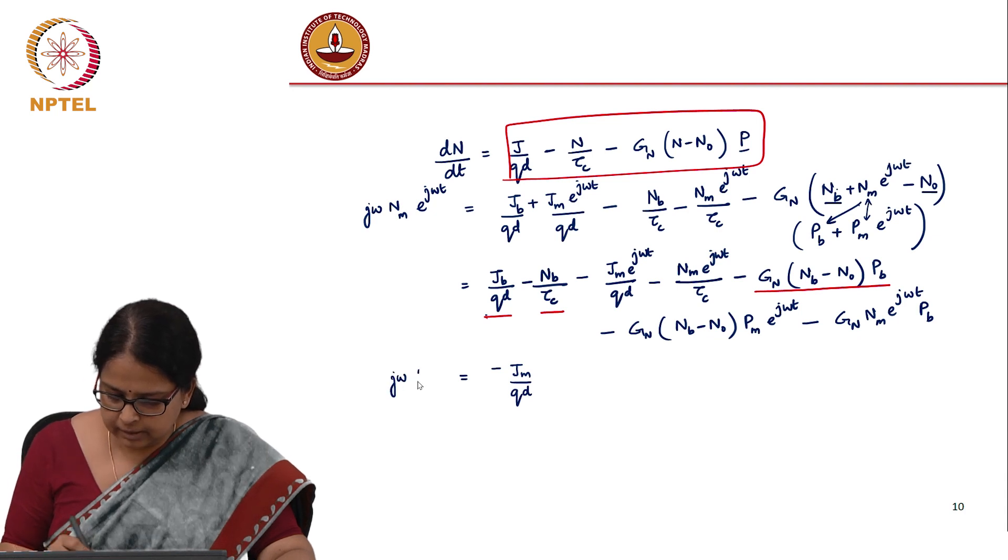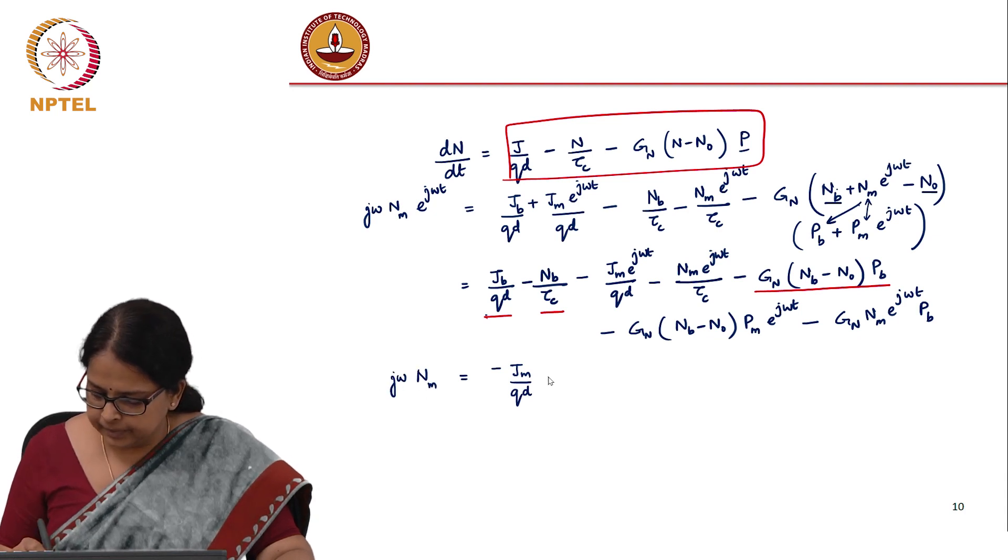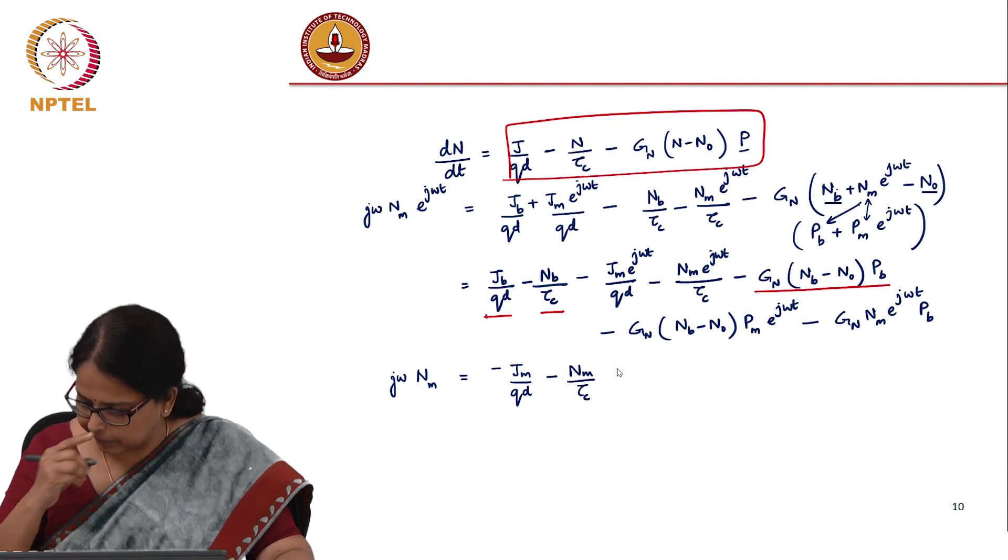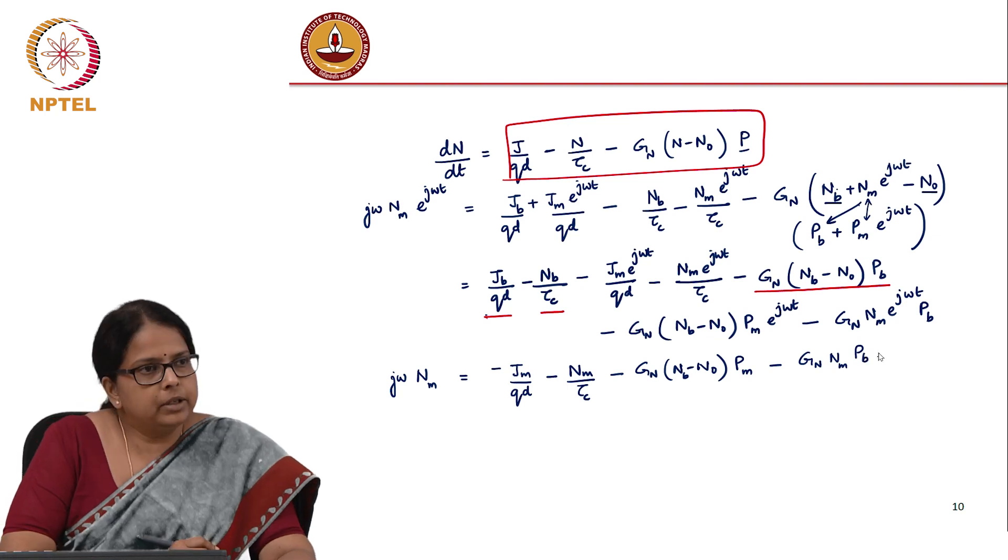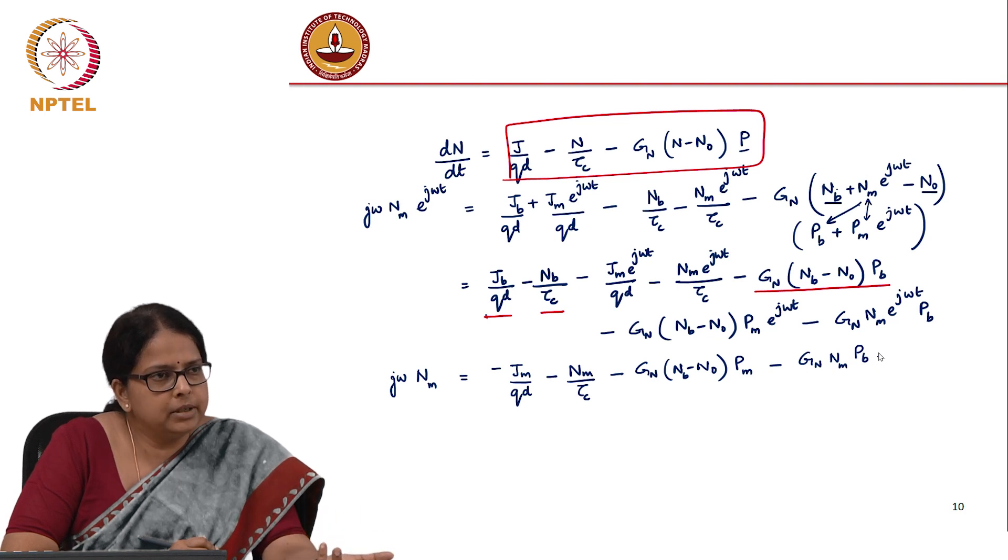Let us drop all the e^(j*omega*t) terms. By the way, what are we interested to find? We want to know the output power or photon number.